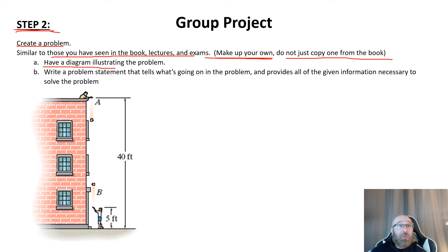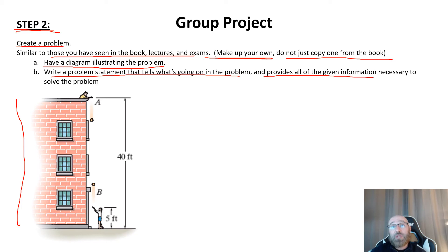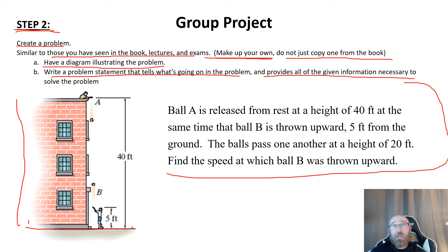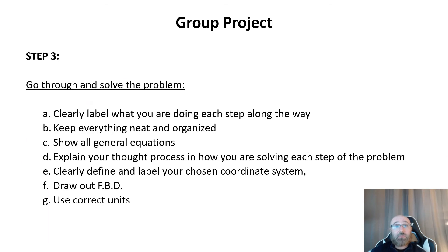Within the problem creation, you're going to have a diagram illustrating the problem, and you're also going to write out a problem statement that tells what's going on and provides the other groups solving your problem with all the necessary information they need to come up with a solution. So you want to have not only the diagram but also a problem statement covering all the information needed to solve the problem. Then we move on to Step three, where you actually solve your problem — also due this week in Module 12.